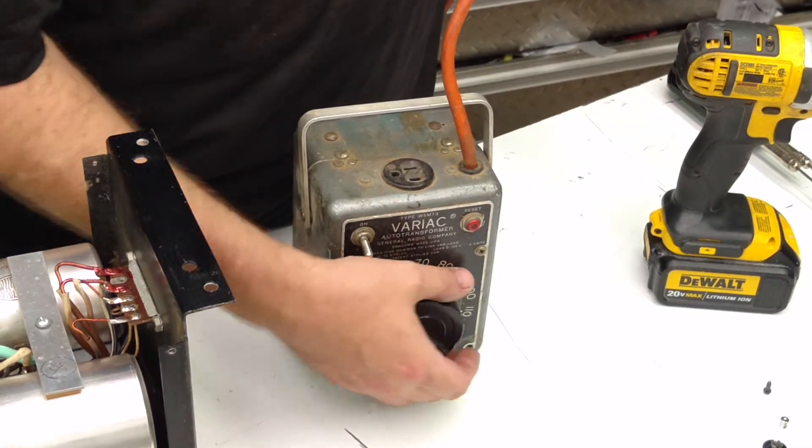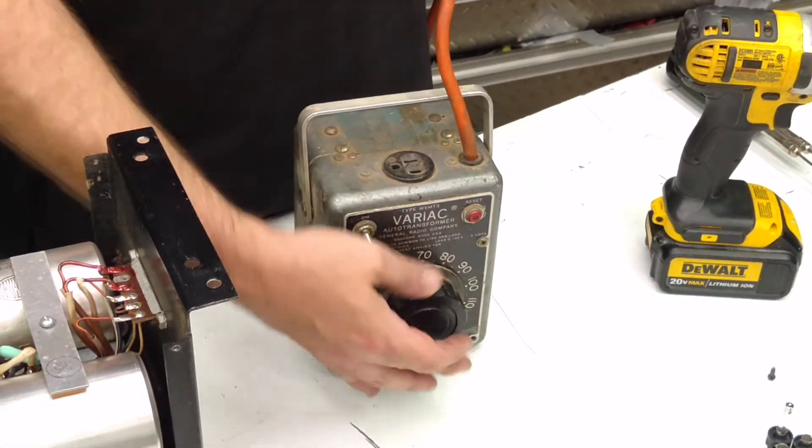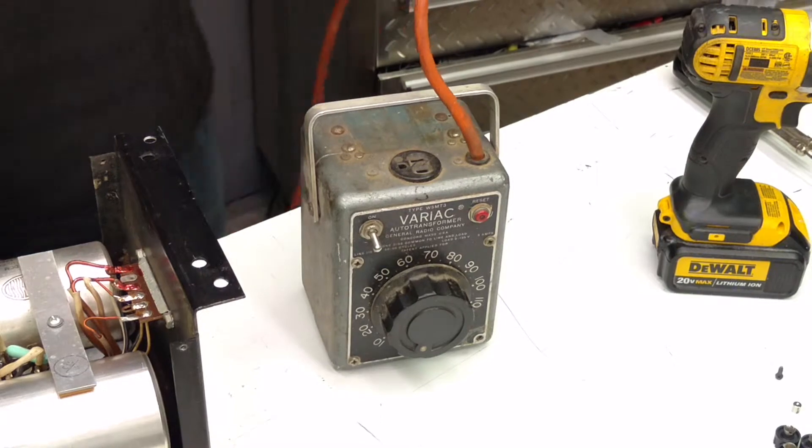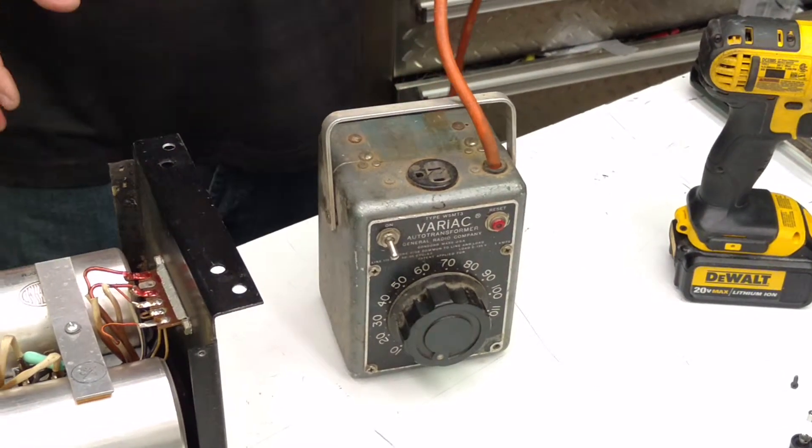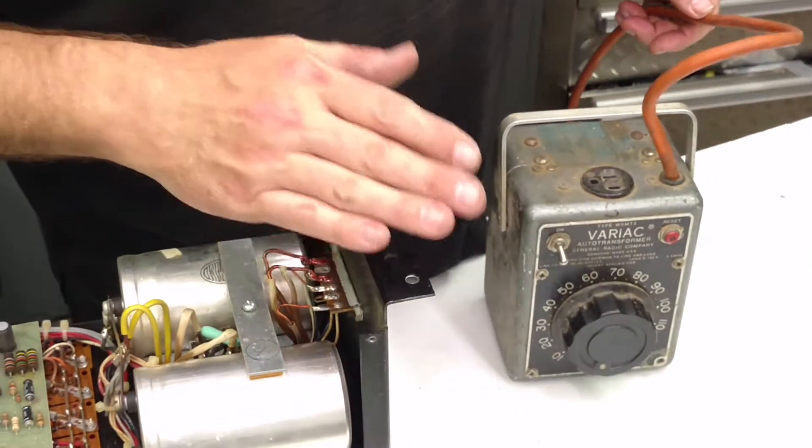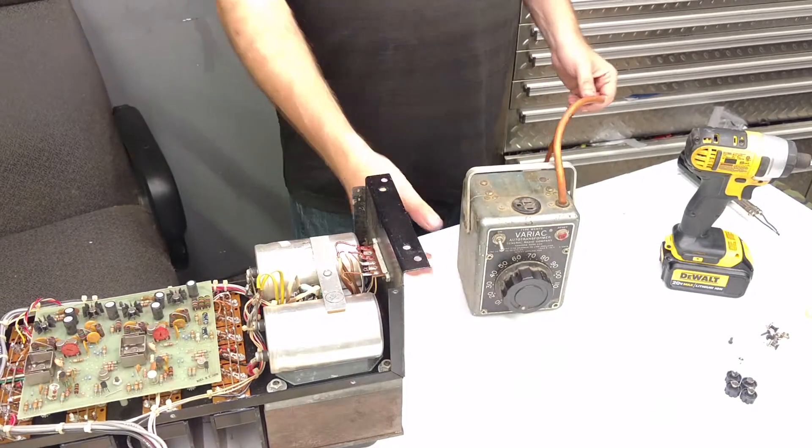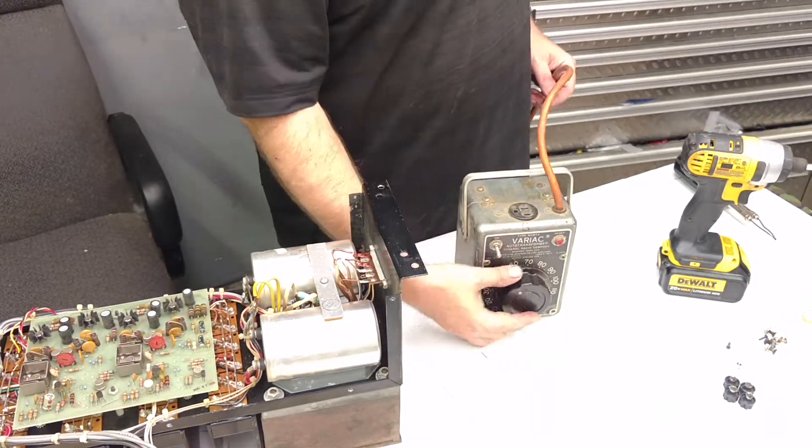You can turn this, and as you turn it, the voltage goes up. So in an amplifier like this, if you think there's going to be a problem and you start seeing heat or any type of smoke or signs of stress, you start out very low and turn this thing up very slowly.